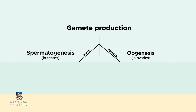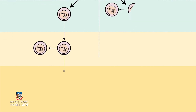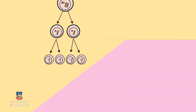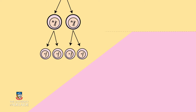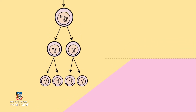Fact 4: division. Gametes are formed through a process of cell division called meiosis. During meiosis, one parent stem cell divides twice to form four daughter cells. These four daughter cells have only half the number of chromosomes as the parent cell. The parent cell is referred to as diploid, meaning two sets of chromosomes, whilst the daughter cell is referred to as haploid, meaning one set of chromosomes.